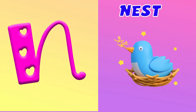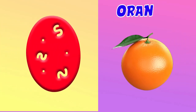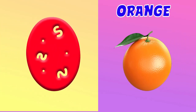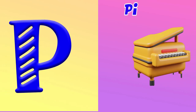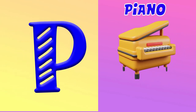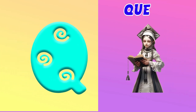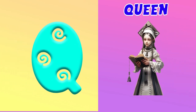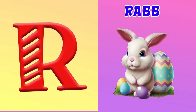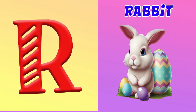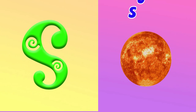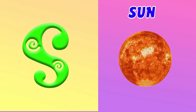N for Nest. O for Orange. P for Piano. Q for Queen. R for Rabbit. S for Sun.